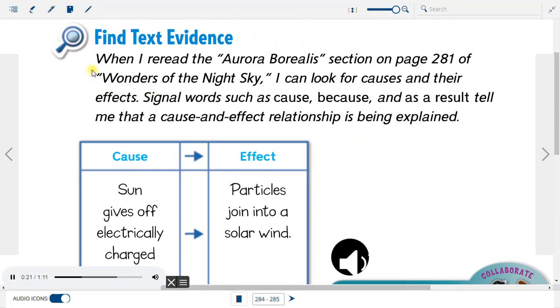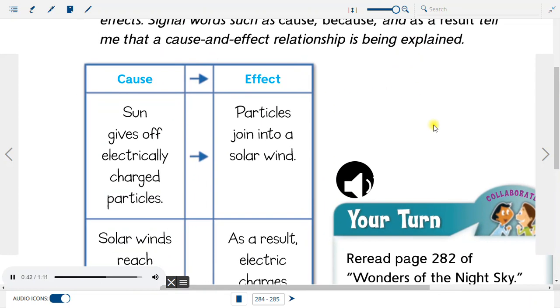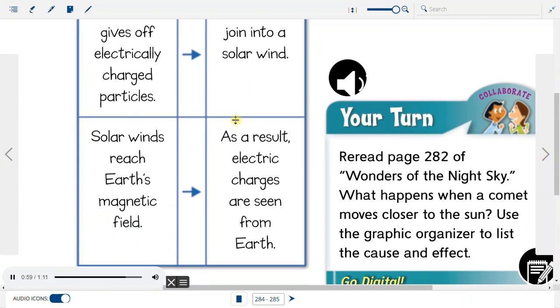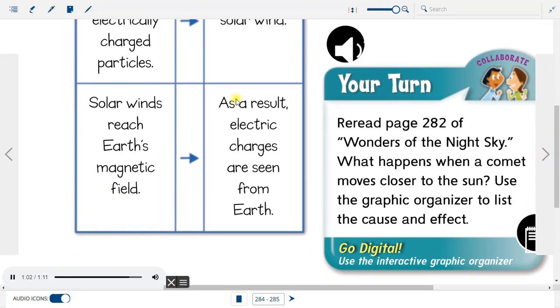Find text evidence. When I reread the Aurora Borealis section on page 281 of Wonders of the Night Sky, I can look for causes and their effects. Signal words such as cause, because, and as a result tell me that a cause and effect relationship is being explained. Graphic organizer: Cause - The sun gives off electrically charged particles. Effect - Particles join into a solar wind. Cause - Solar winds reach Earth's magnetic fields. Effect - As a result, electric charges are seen from Earth.